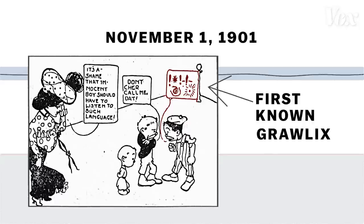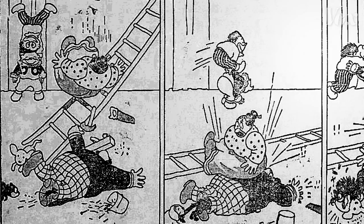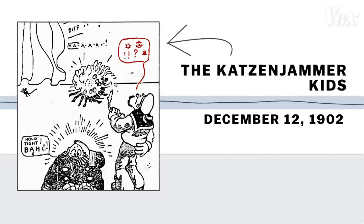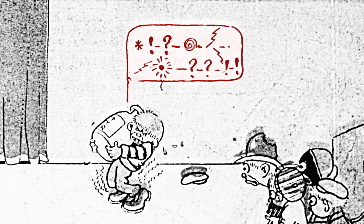Now, it's hard to be certain that this really was the first Grawlix, but suddenly in 1902 and 1903 there were a ton of them, and only a few comics were innovative enough to employ the new device. In December 1902, the Katzenjammer Kids joined in with Lady Bountiful. These trailblazing comics established how you talk in comics with speech bubbles, and with the Grawlix, they established how you showed that you just don't give a damn.